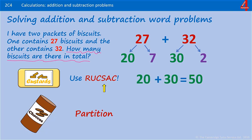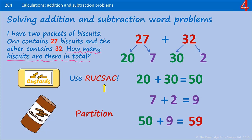Now we add the ones. 7 add 2, that's 9. Add 50 and 9 together and we have 59. Answer the question — that's 59 biscuits altogether.